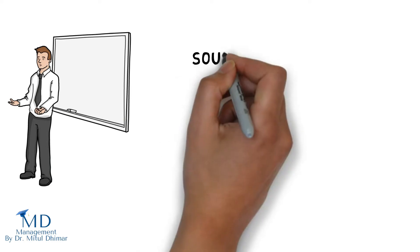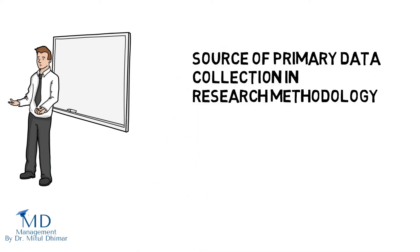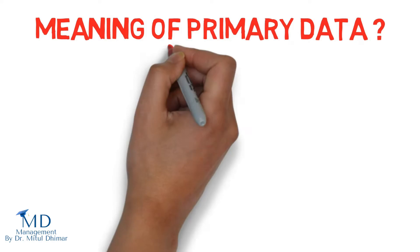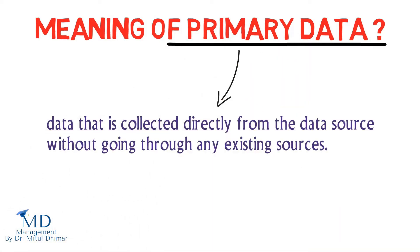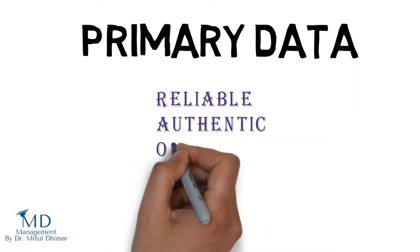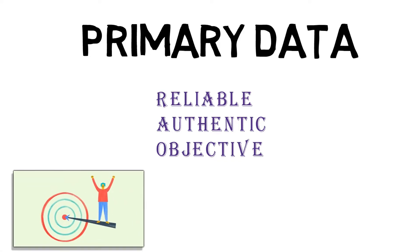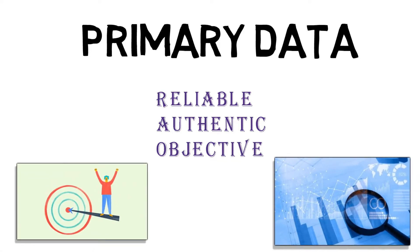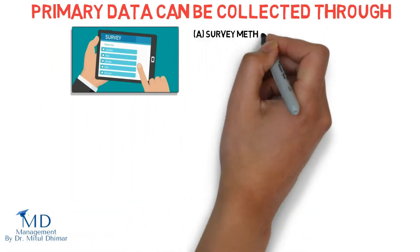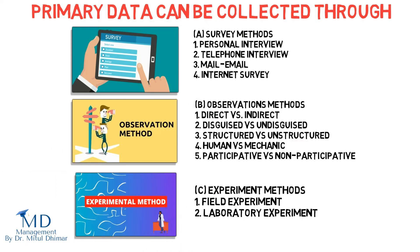A researcher can evaluate their hypothesis based on collected data. In this video we are going to understand sources of primary data collection in research methodology. Primary data is the kind of data that is collected directly from the data source without going through any existing sources. Primary data is often reliable, authentic, and objective, as it was collected with the purpose of addressing a particular research problem. Example: census data collected by the government to enumerate the population. Primary data can be collected through survey methods, observation methods, and experiment methods.